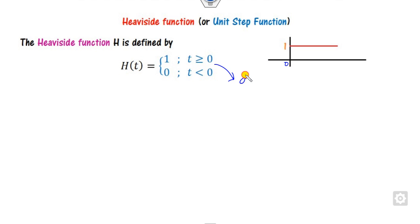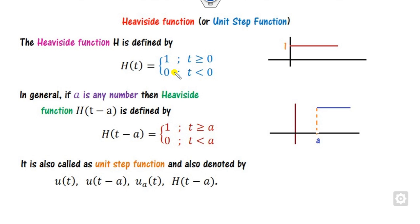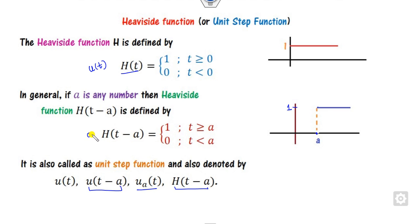Clearly, this is a discontinuous function, because at t = 0 the value is 1, while at t = 0⁻ it is 0. In general, whenever there is a point a, after that point a the value is 1 and otherwise 0. This is generally denoted as h(t − a), sometimes as u(t − a), or u(t). It is also denoted as u_a(t) or h_a.